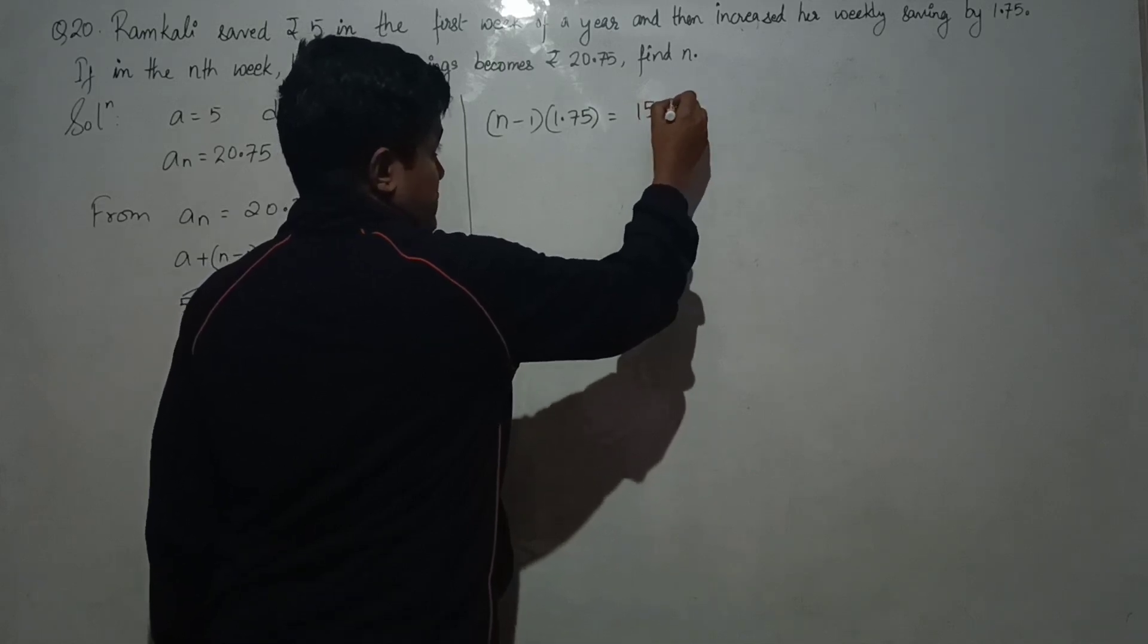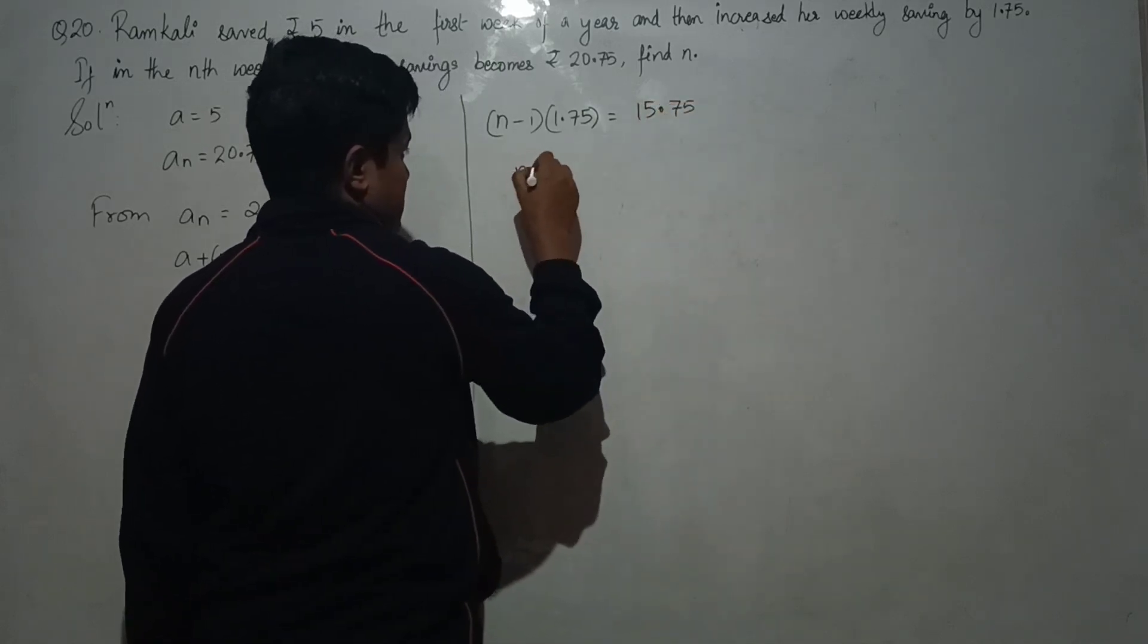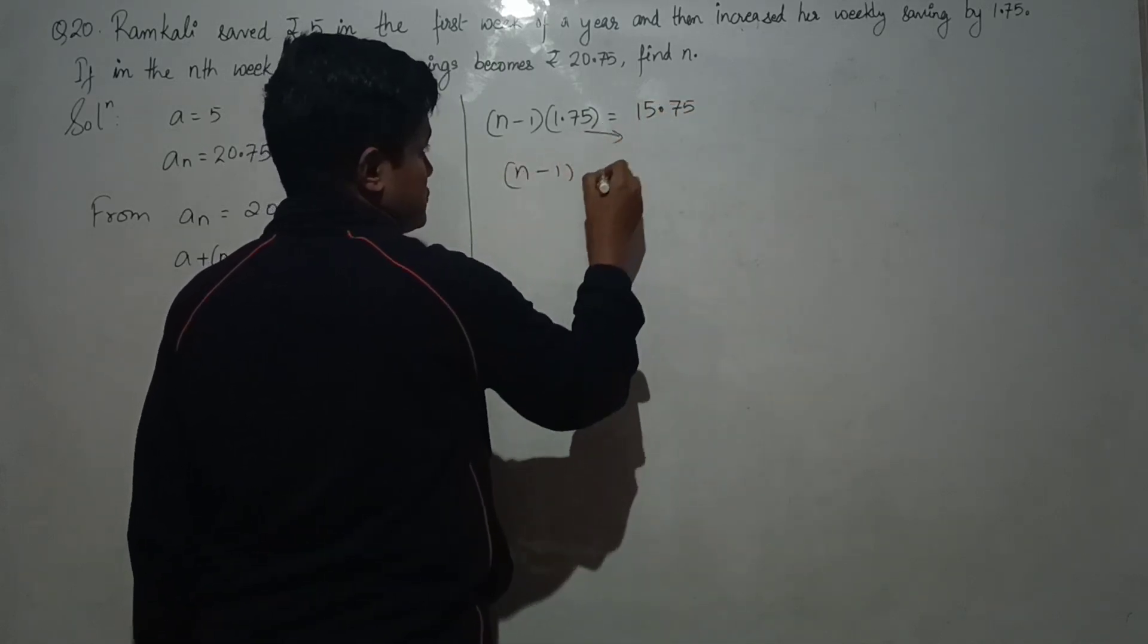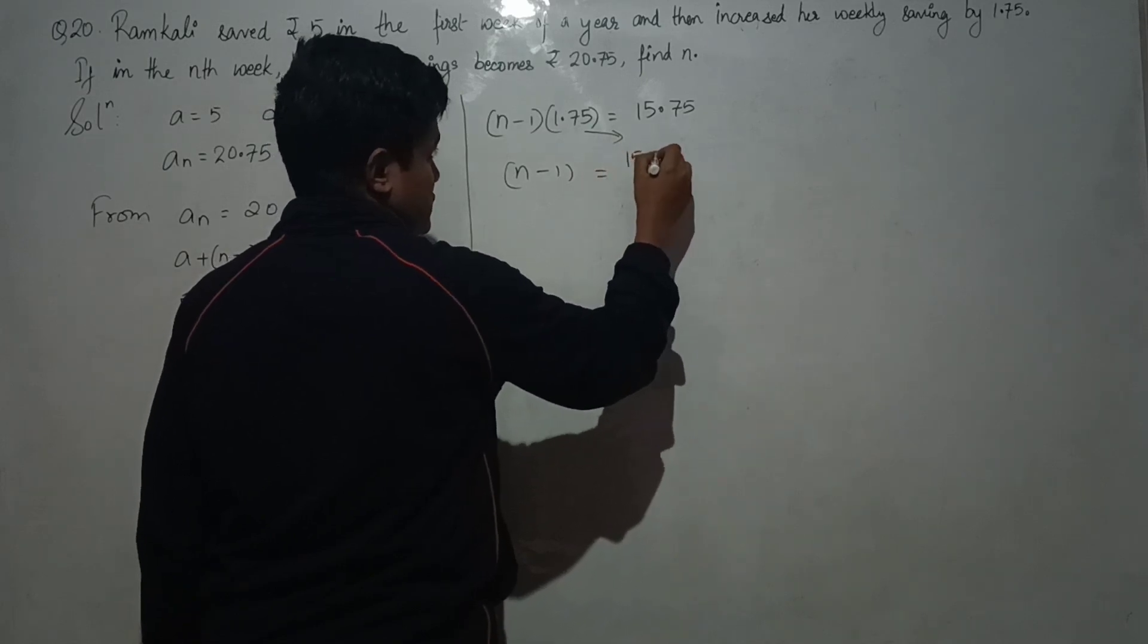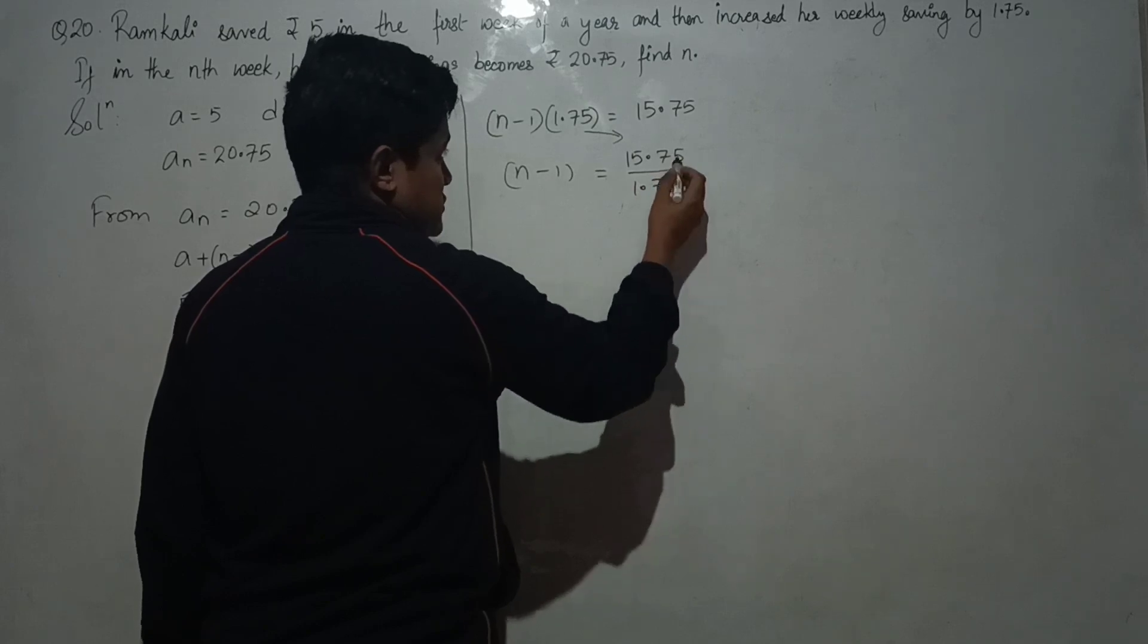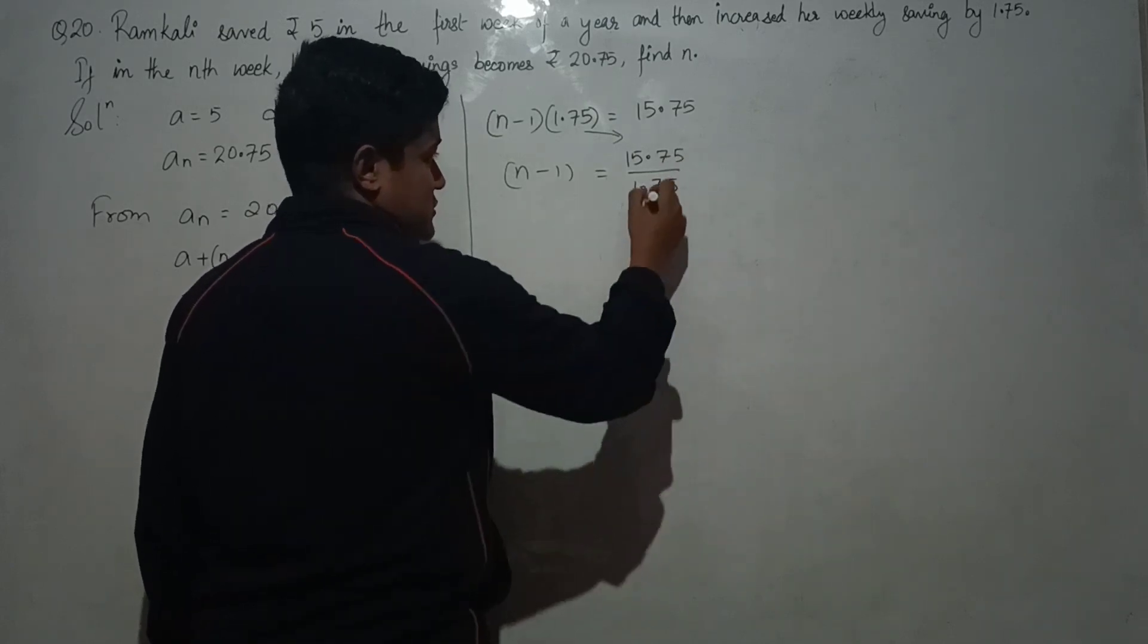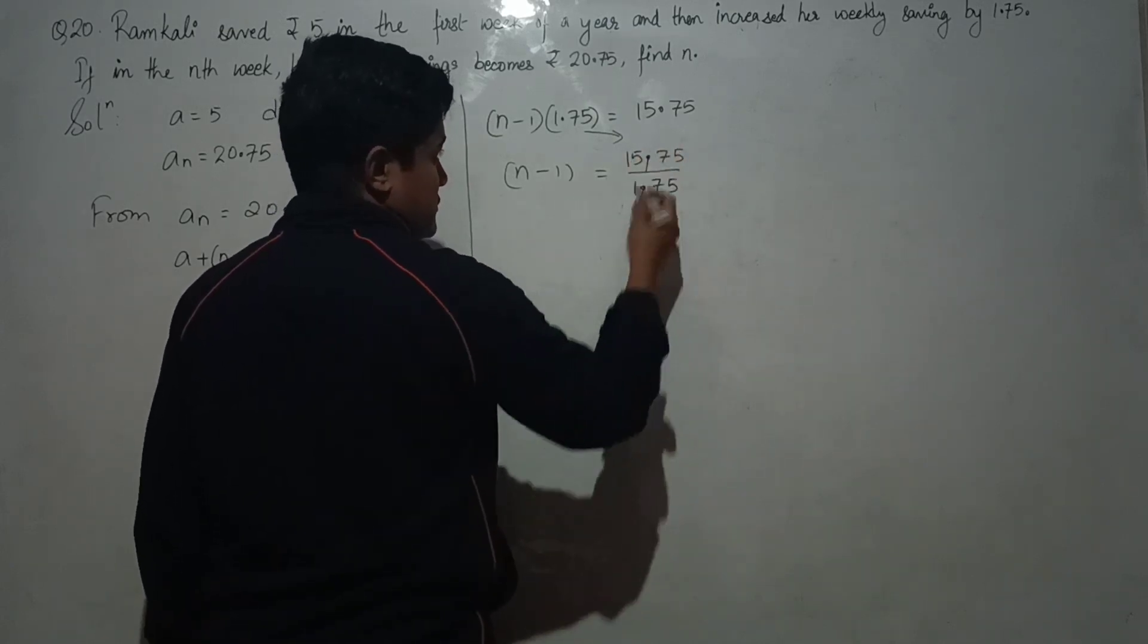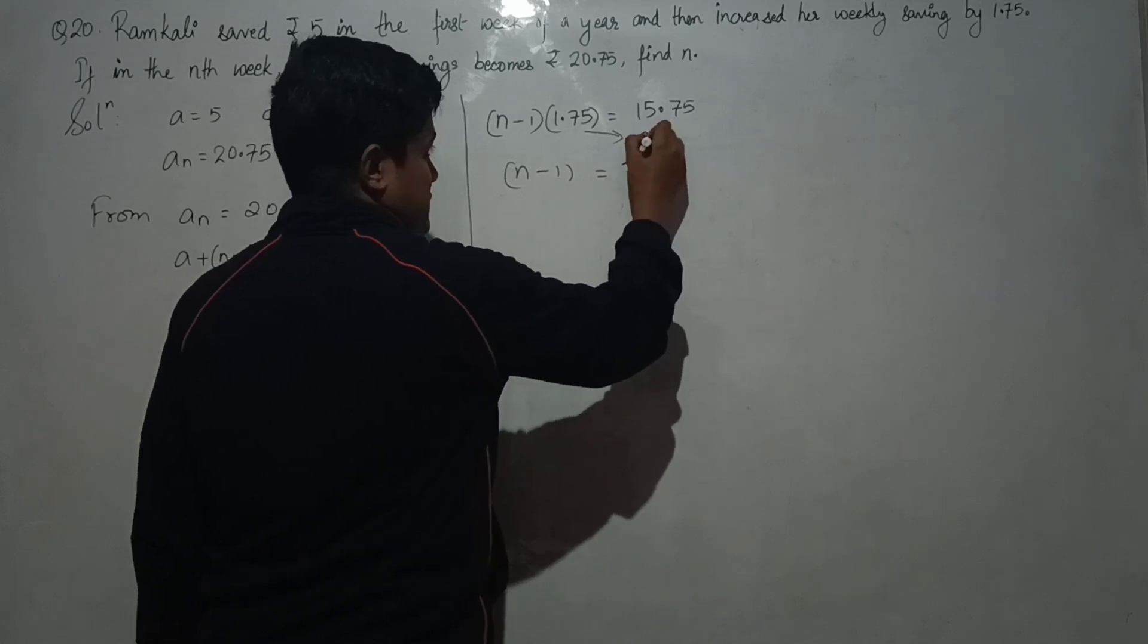Moving to the denominator, we get (n minus 1) equals 15.75 divided by 1.75. Cancel the decimal points.